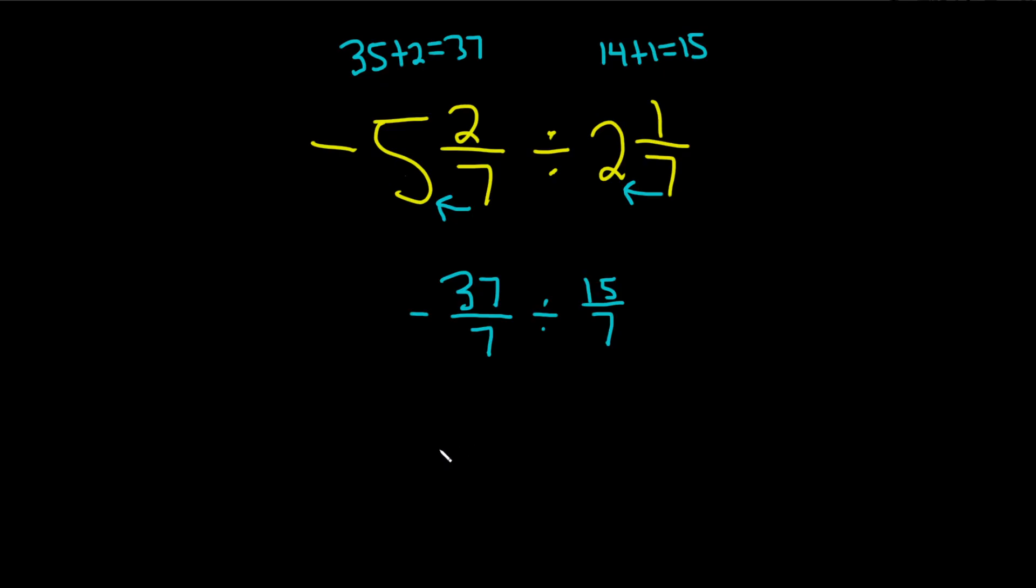Now we're going to use the fact that division is the same thing as multiplication by the reciprocal. So we keep this number, negative 37 over 7. Put a times here, and then you write down the reciprocal of this number. That's just 7 over 15. All you do is flip it to find the reciprocal.